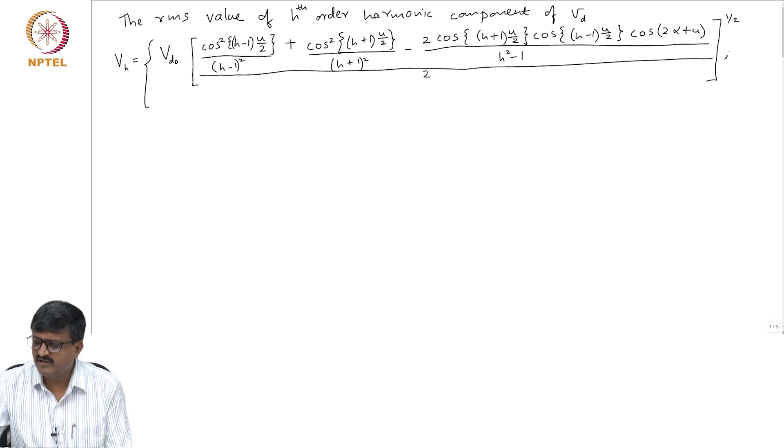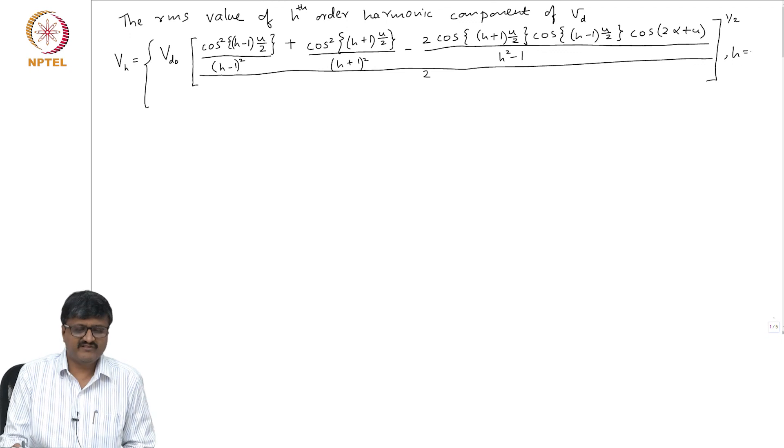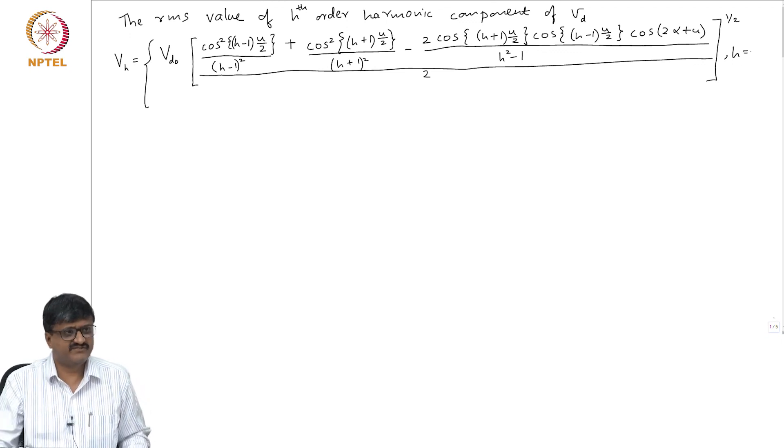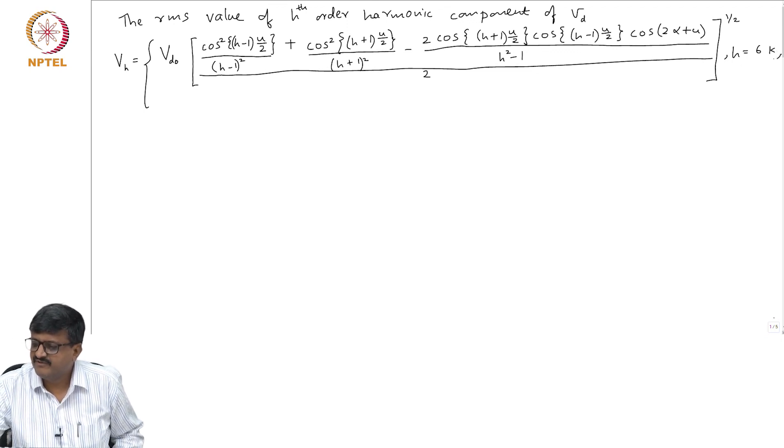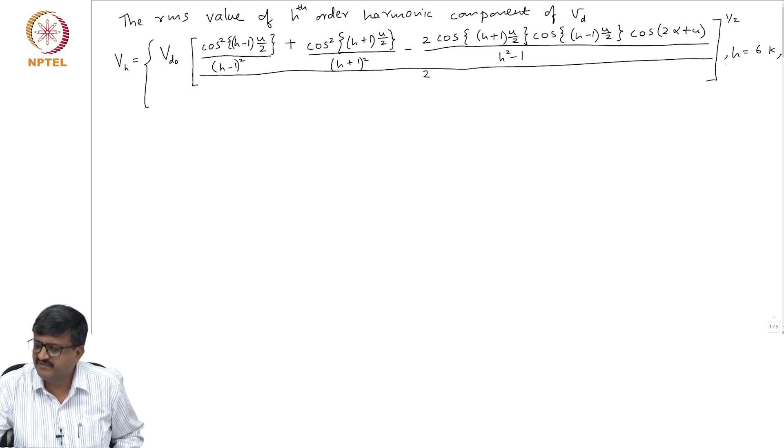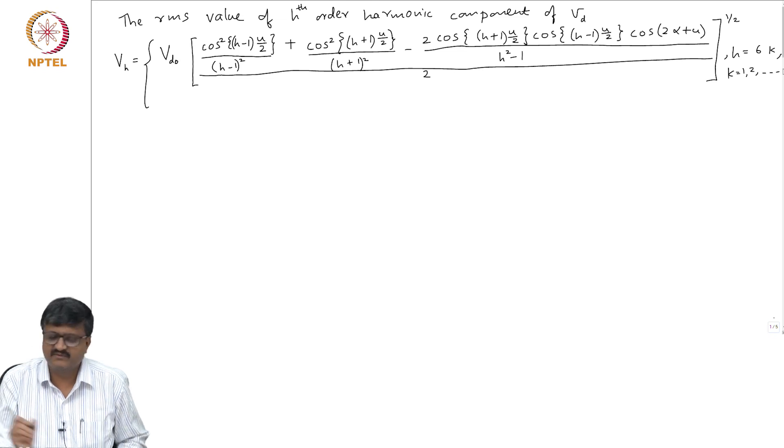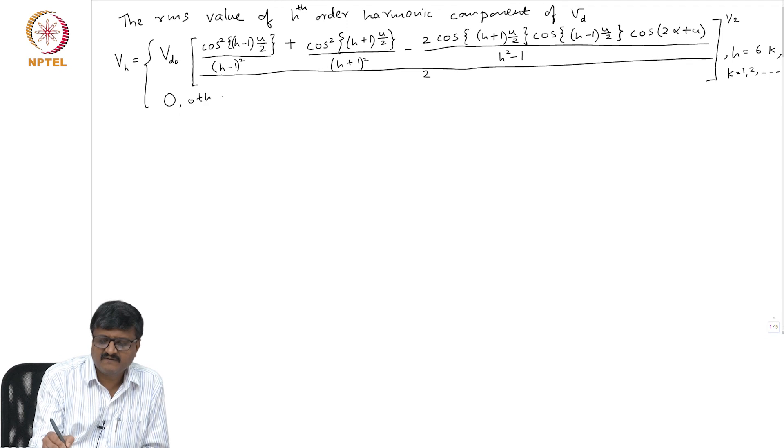It is non-zero for - what values of H is it non-zero for? Six times any positive integer, 6k. It is non-zero for all values of the type 6k where k is 1, 2 and so on, and it is zero otherwise.